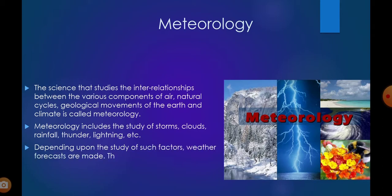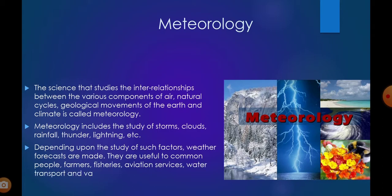Depending upon the study of such factors, weather forecasts are made. These are useful to common people, farmers, fisheries, aviation services, water transport, and various other organizations. For example, the government announces warnings to fishermen not to go to the ocean for fishing when a cyclone, storm, or heavy rainfall is predicted within the next 24 hours.